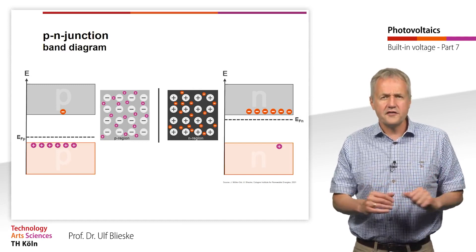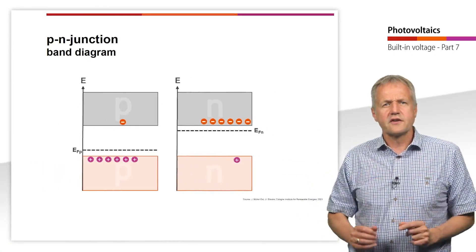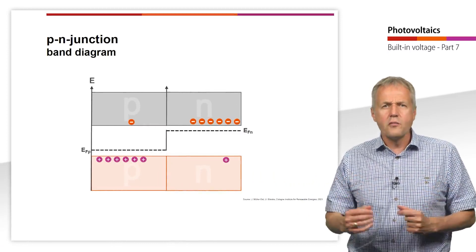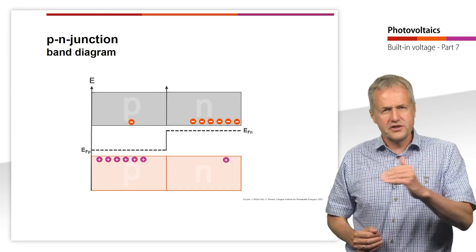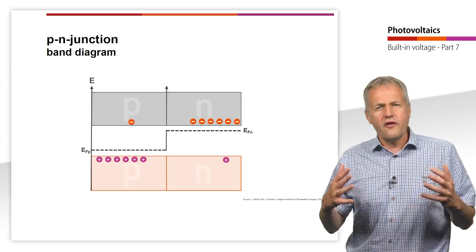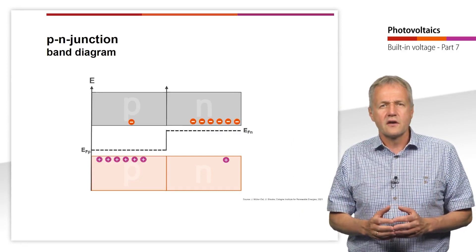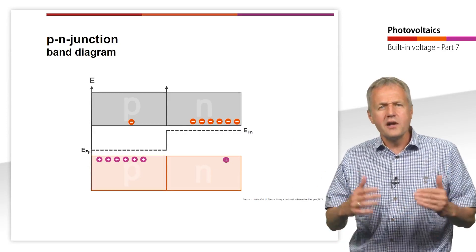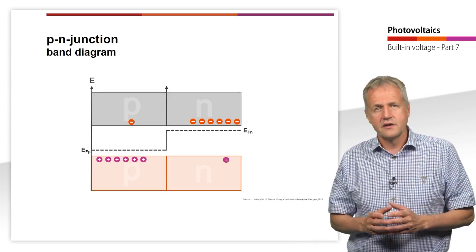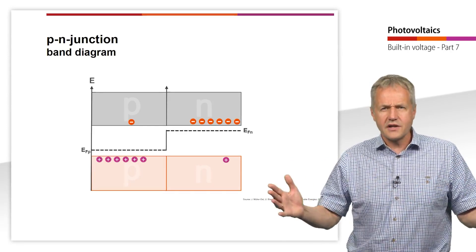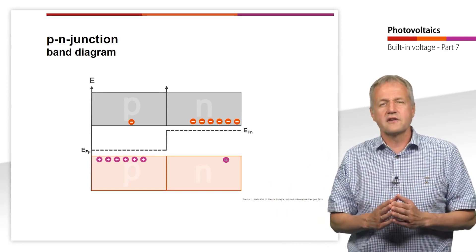The Fermi level of the p region is just above the valence band. Now let's connect the two regions and consider the very short moment before the charge carriers start to diffuse to the opposite regions. You can see that the Fermi energy jumps at the boundary between the two regions. However, what you need to know is that the Fermi level in thermal equilibrium has to be constant across the entire semiconductor — it doesn't matter how large the semiconductor is. In thermal equilibrium, the Fermi level always is constant across the entire crystal.